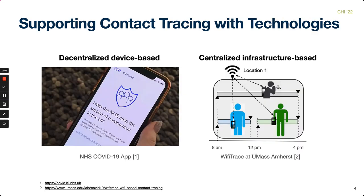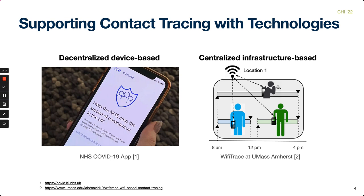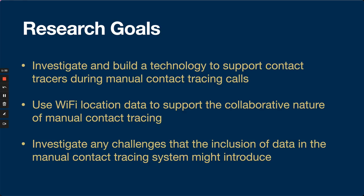There are two technological approaches that have been suggested for contact tracing: decentralized device-based and centralized infrastructure-based. Both are fully explained in our paper. We chose to use the latter for this study, utilizing a robust infrastructure and high adoption rate of our university campus Wi-Fi network. From campus Wi-Fi authentication logs, we collected access point location, building category, device authentication IDs, and duration to create a visualization of community member movement through time and space.